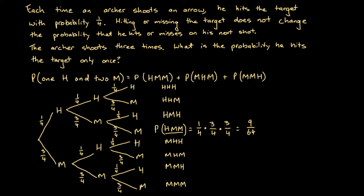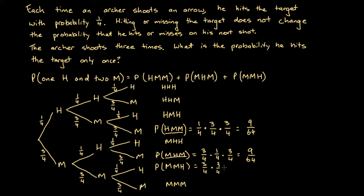What about the probability that he misses, then hits, then misses — M H M? That's 3/4 times 1/4 times 3/4. Three times one times three is nine, four times four times four is sixty-four, so that's also 9/64.